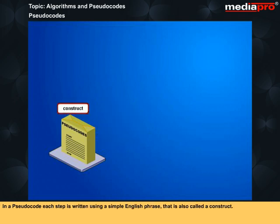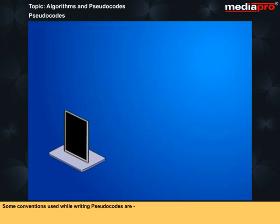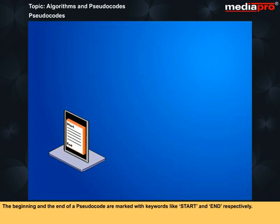In a pseudocode, each step is written using a simple English phrase that is also called a construct. Some conventions used while writing pseudocodes are: all statements in a loop should be indented, all alphanumeric values should be enclosed in single or double quotes, the beginning and end of a pseudocode are marked with keywords like start and end respectively. All statements must include certain keywords which denote an operation.